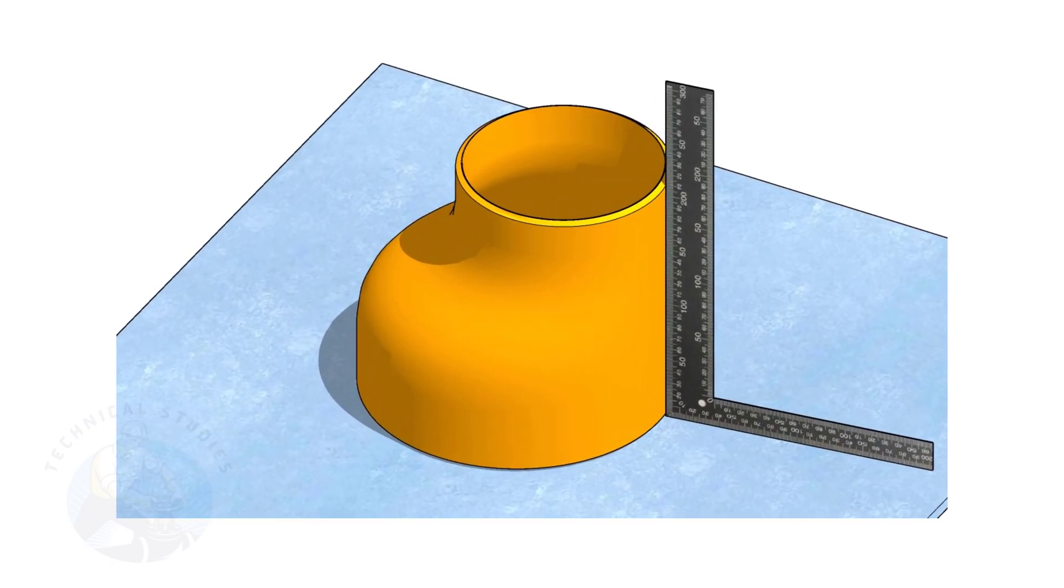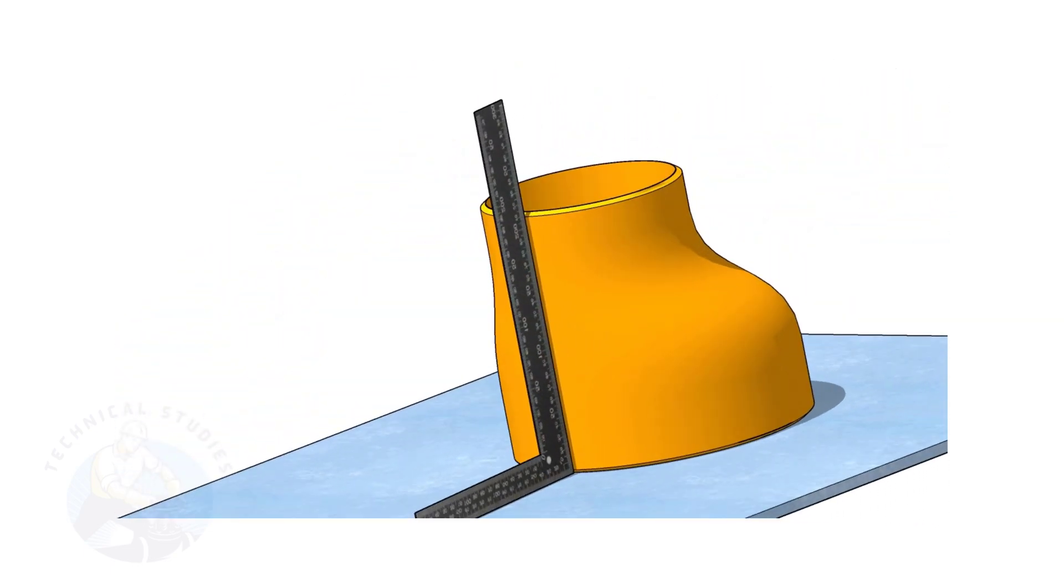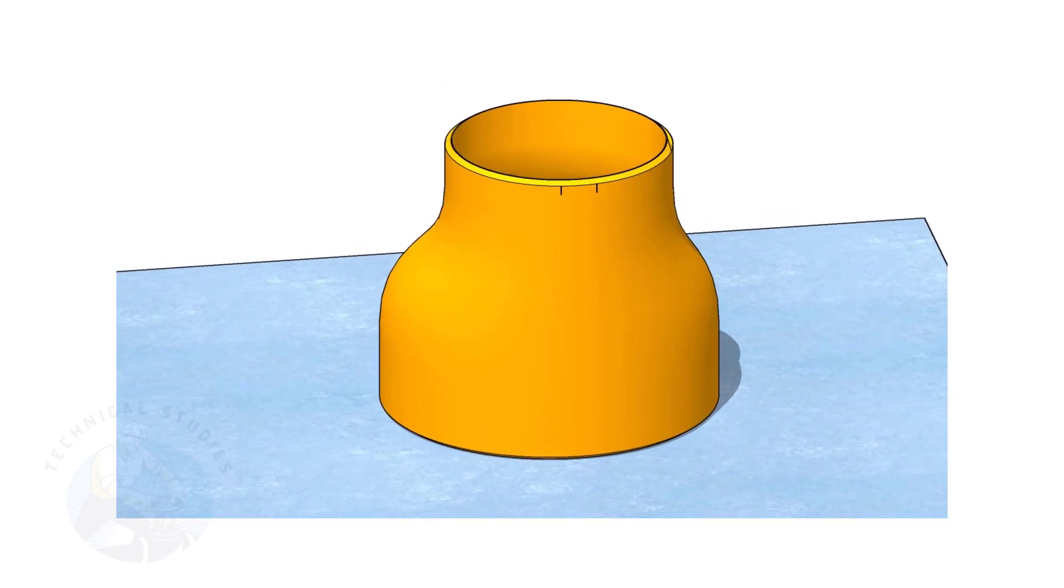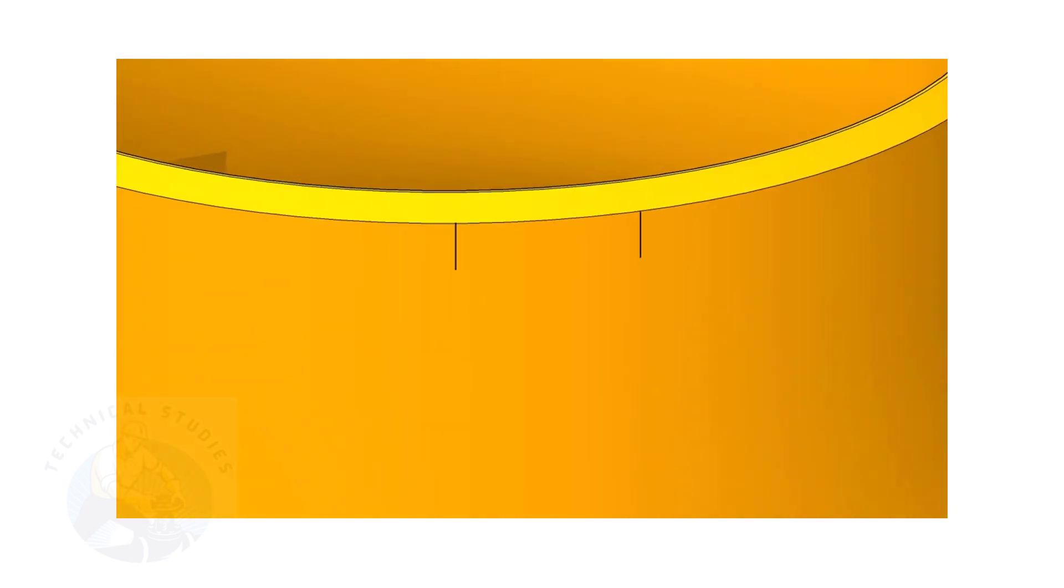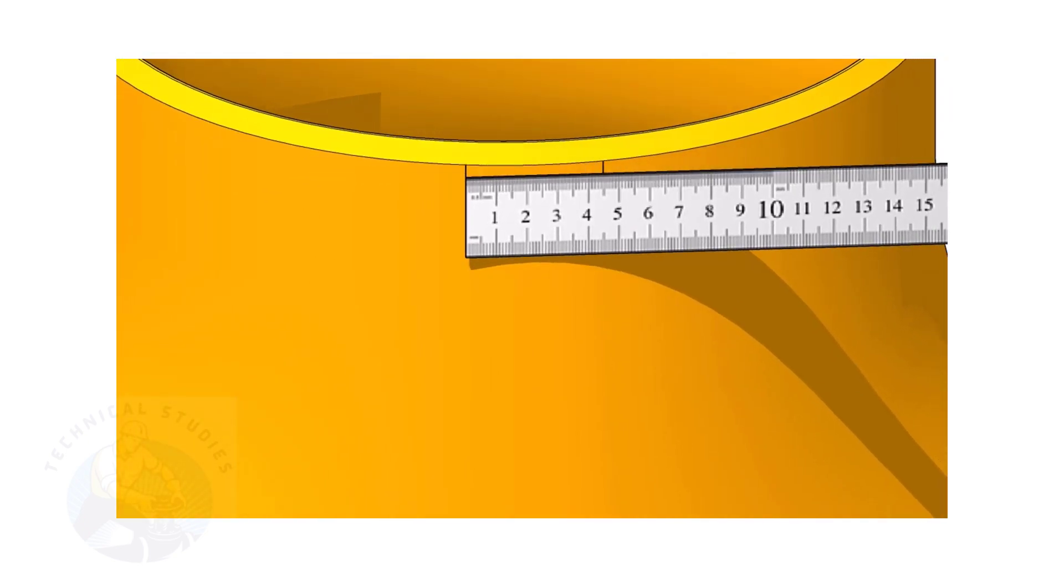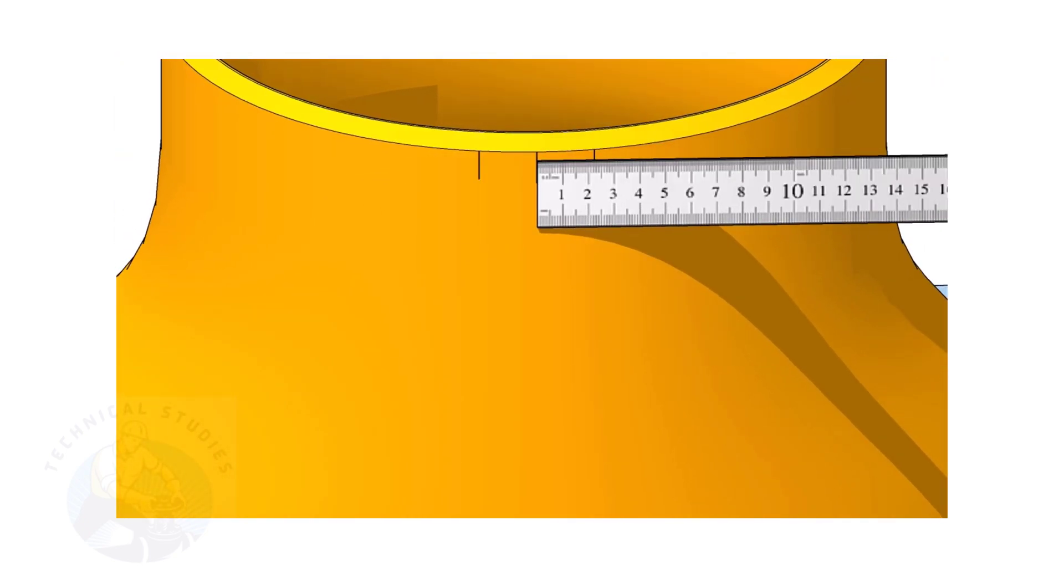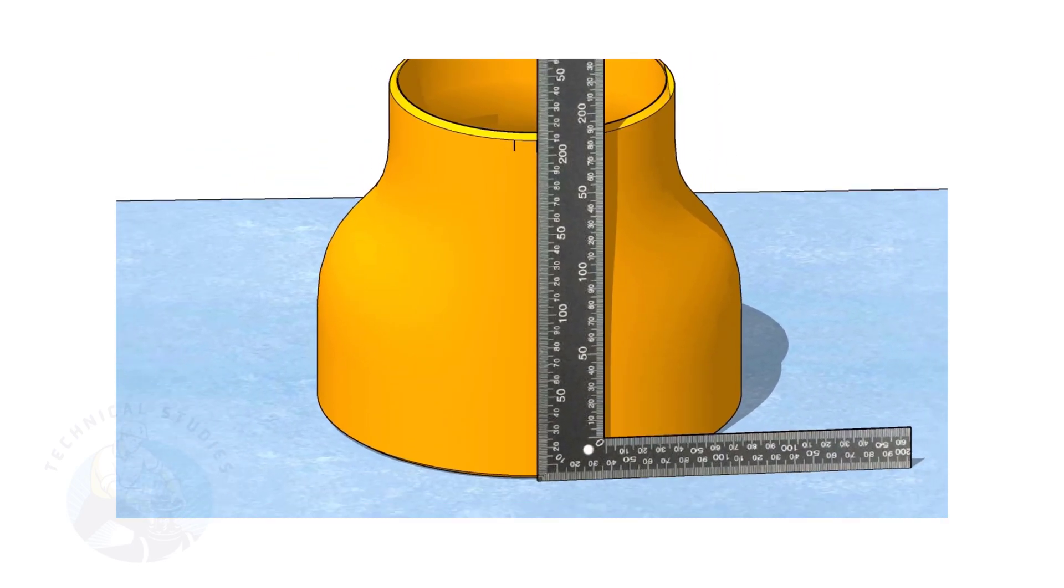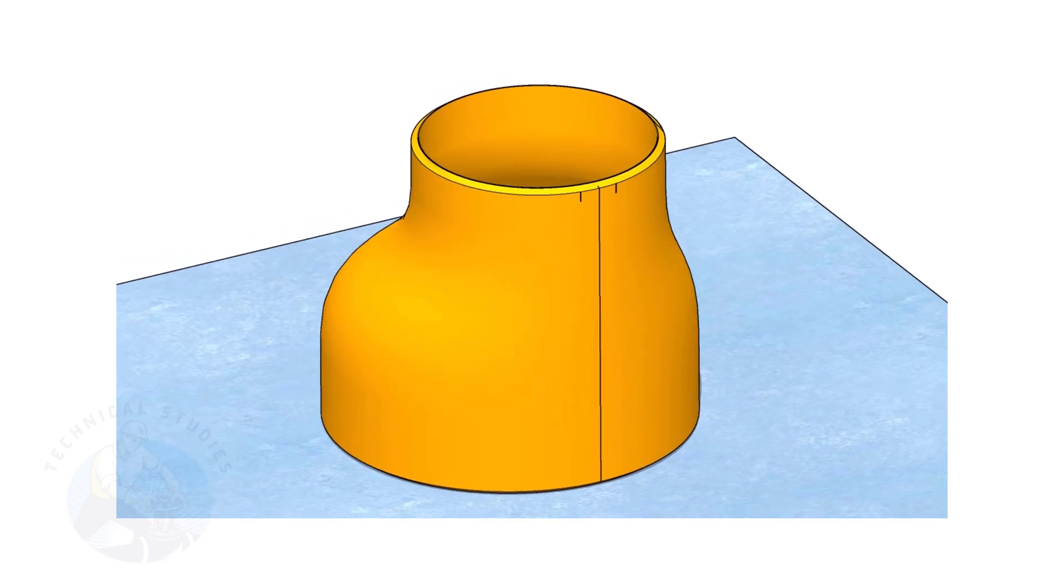It is a good practice marking the center lines of the fittings before starting the fit up, especially an eccentric reducer. I have already posted videos on how to mark the center lines of an eccentric reducer in different methods. In this video, I will show you the method of fitting an eccentric reducer to a pipe that is already fitted to a flange.